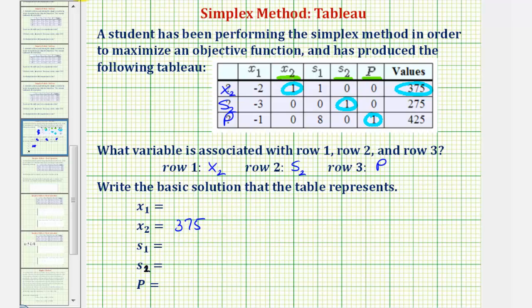Looking at the second row, one times s sub two, which is s sub two, equals two hundred seventy-five.